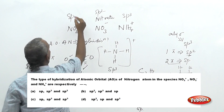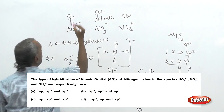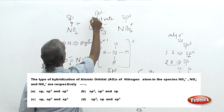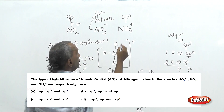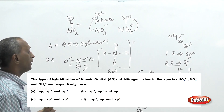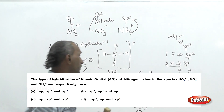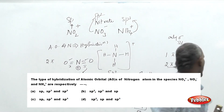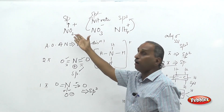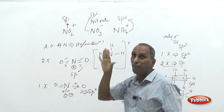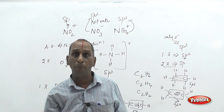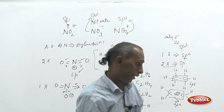In the choices given, the order may be mixed up. The correct answer is the choice where NO₂⁺ species is SP hybridized, nitrate is SP2 hybridized, and ammonium ion is SP3 hybridized. All three are nitrogen-containing species, and we analyze for the presence or number of pi bonds to determine hybridization.